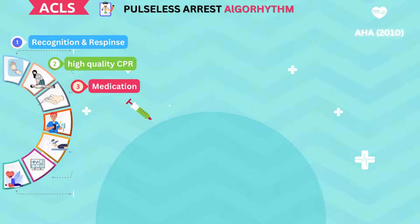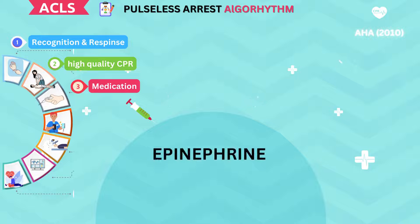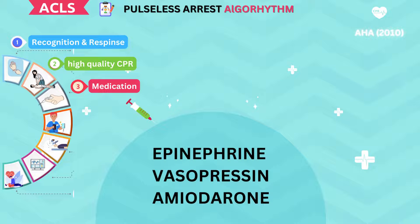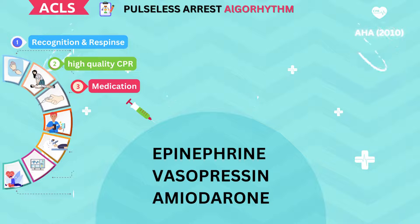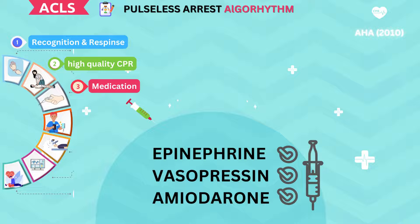Step 3 is Medication Administration. Medications such as epinephrine, vasopressin, and amiodarone may be administered to help restore circulation and maintain cardiac rhythm. The timing and dosages of these medications should be based on the patient's specific condition and should not interrupt high-quality CPR.